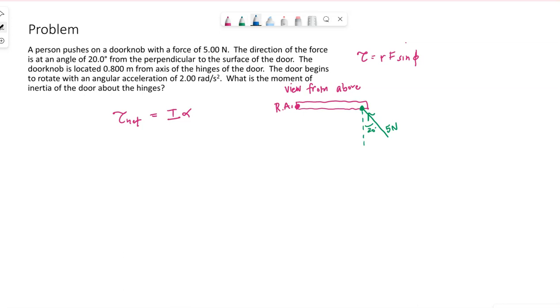We're told that the doorknob is a distance of 0.8 meters from the hinges. When we write out our torque, the torque due to this push, the push is applied 0.8 meters from the hinges. The force is 5, but it is only this component of the force right here in my picture, the y component, that is producing the torque, because that is the component that is perpendicular to the door, to the lever arm.